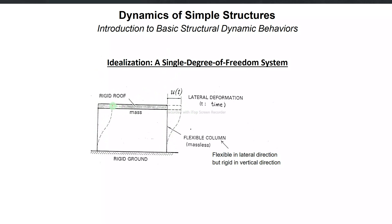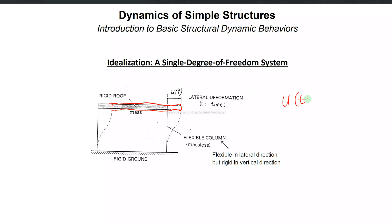Since this structure is moving — for this example, the structure is moving to the right — we have a displacement or a deformation. The lateral deformation here is symbolized by the function u of t, meaning the deformation also varies through time. We call this the lateral deformation, and it is a vector quantity.